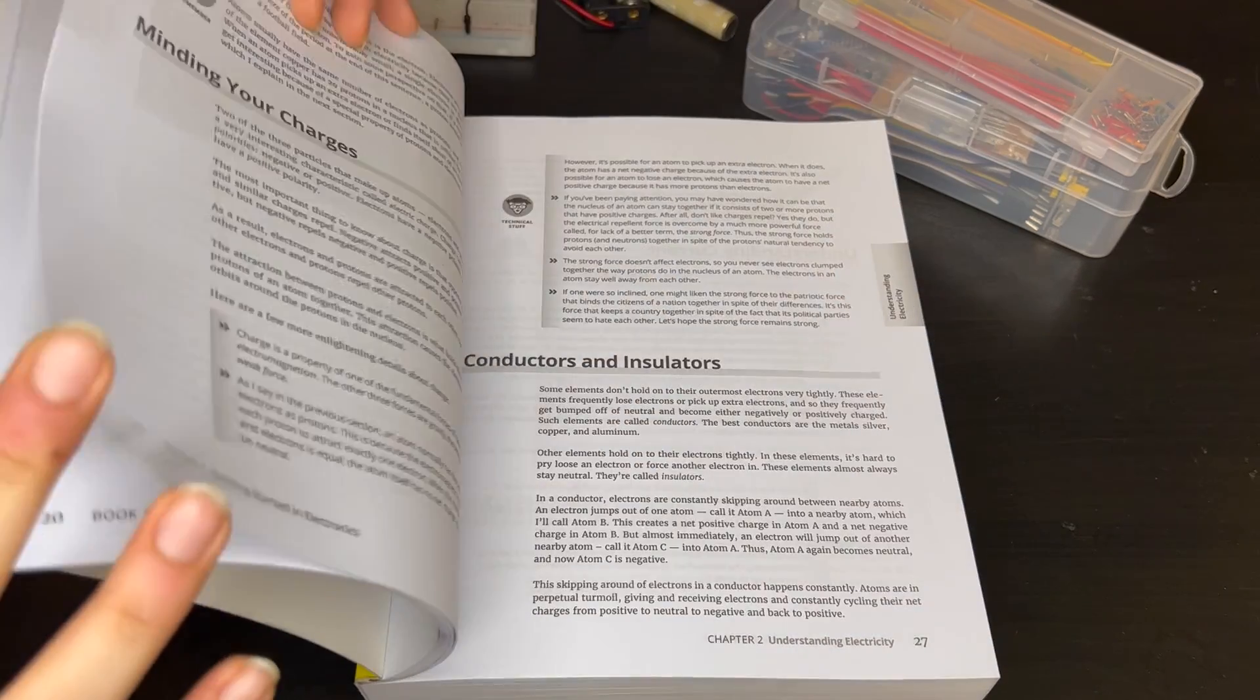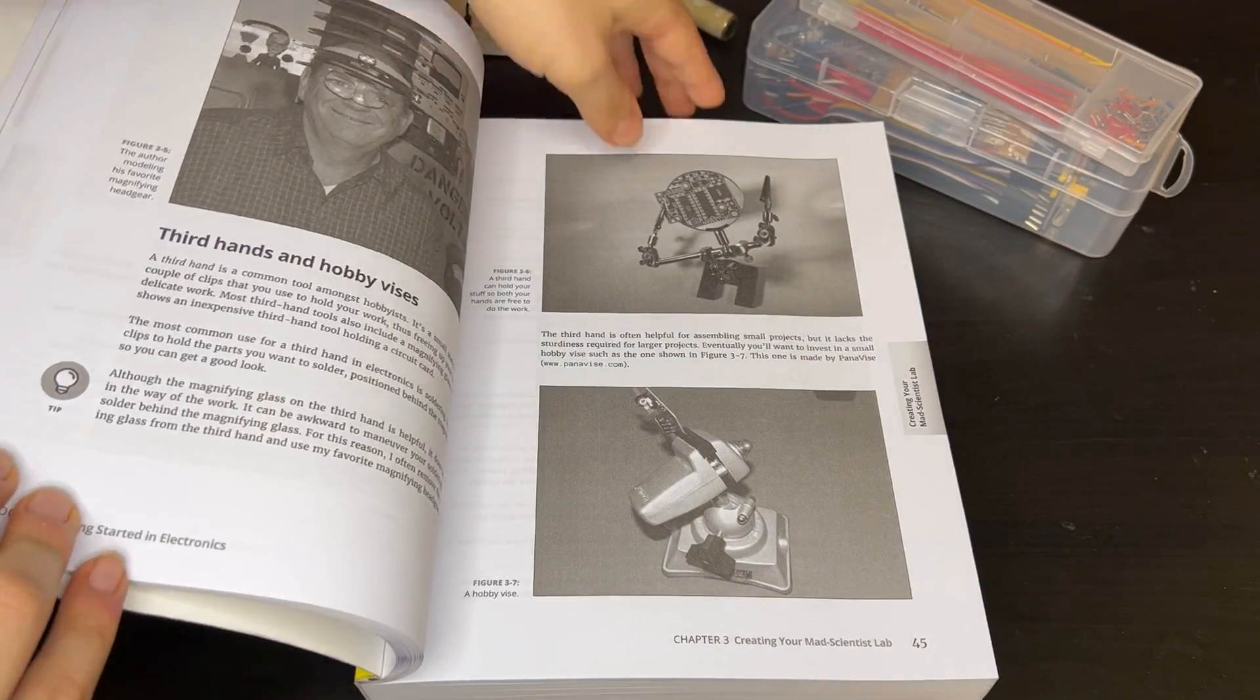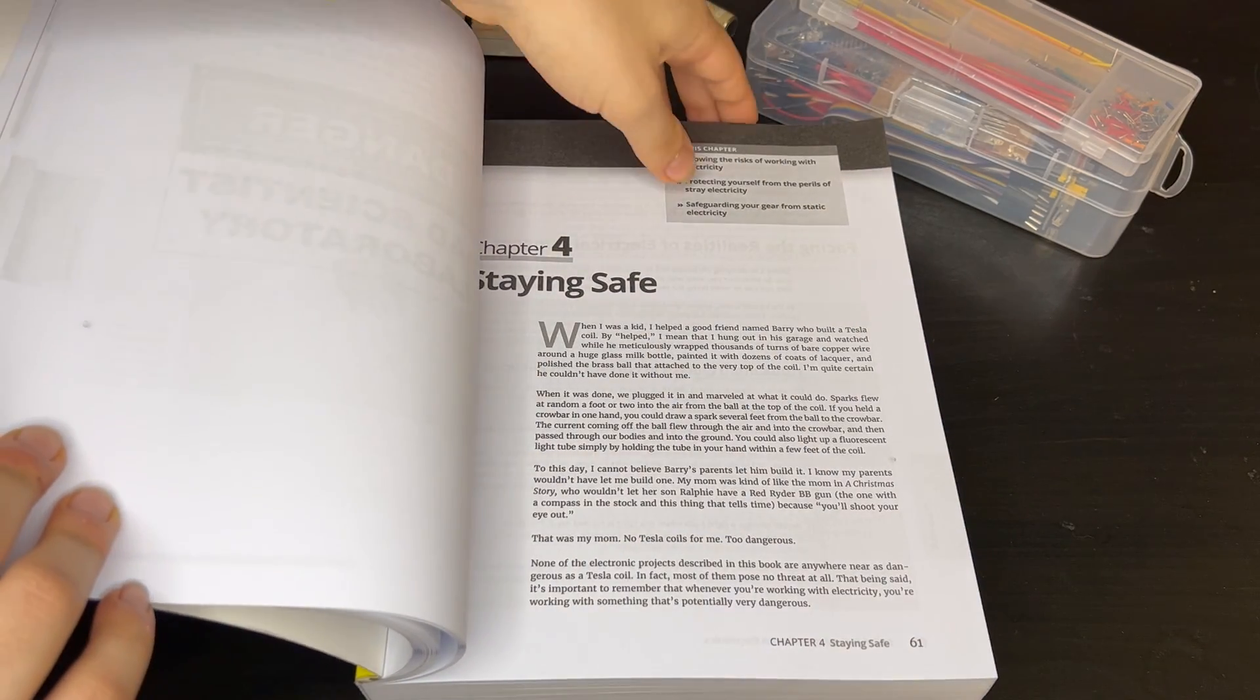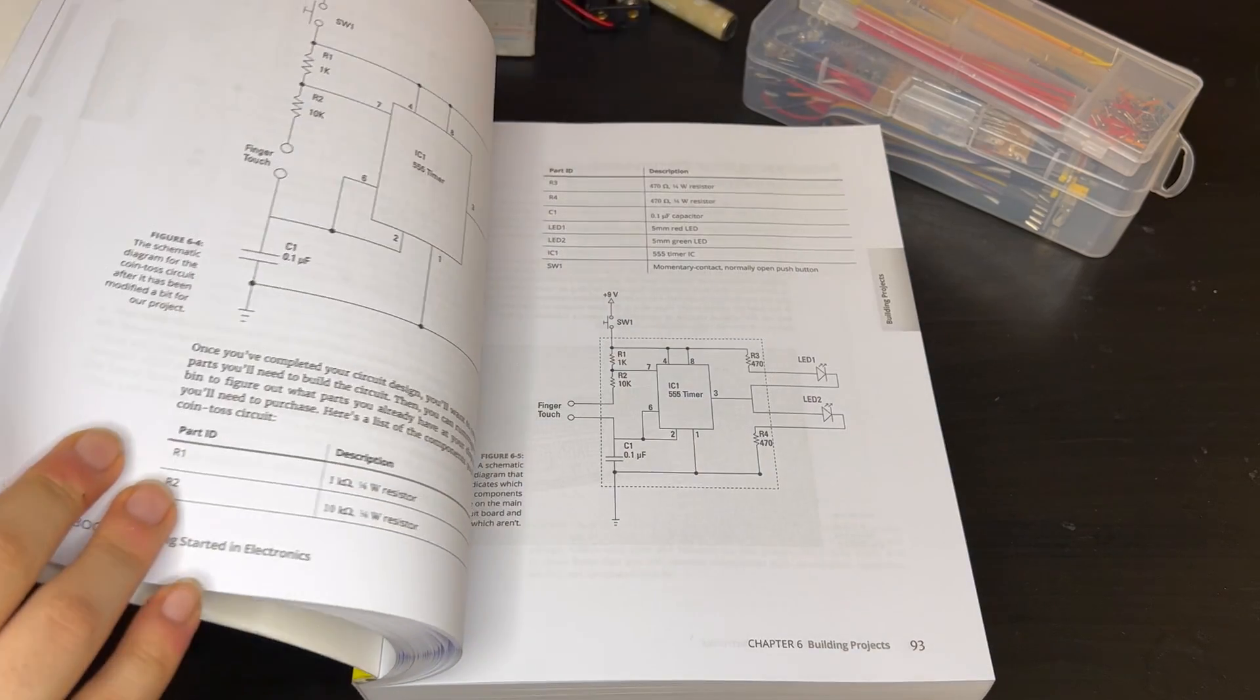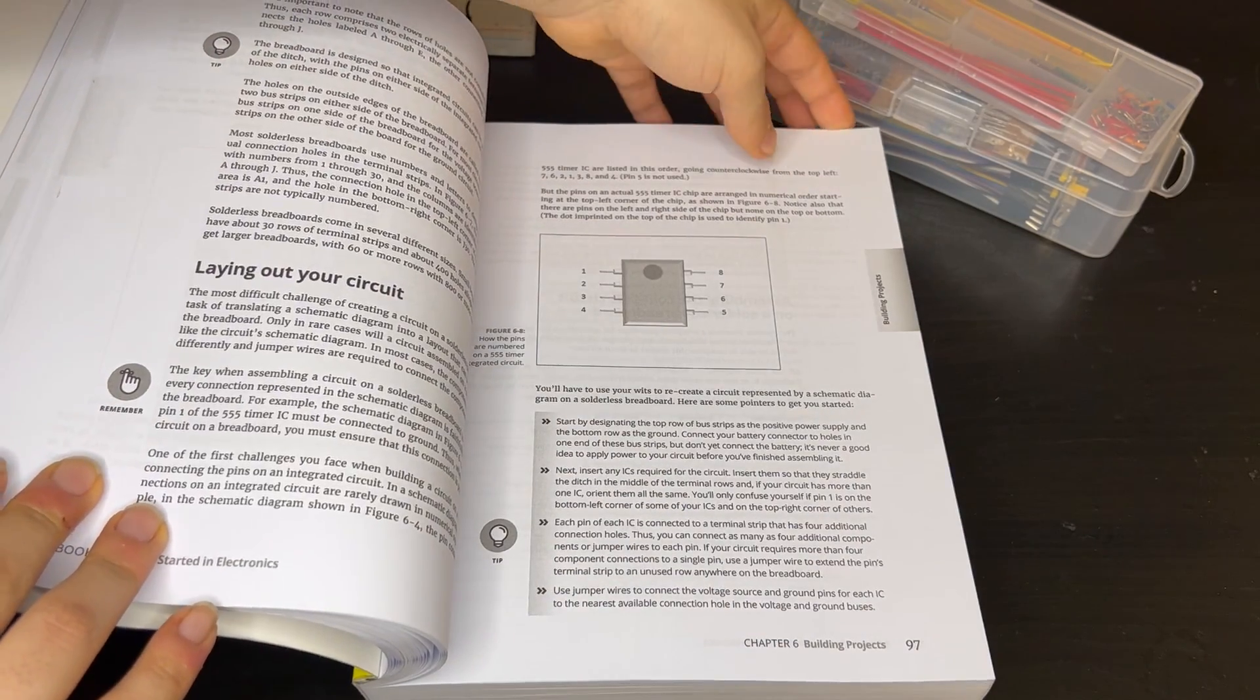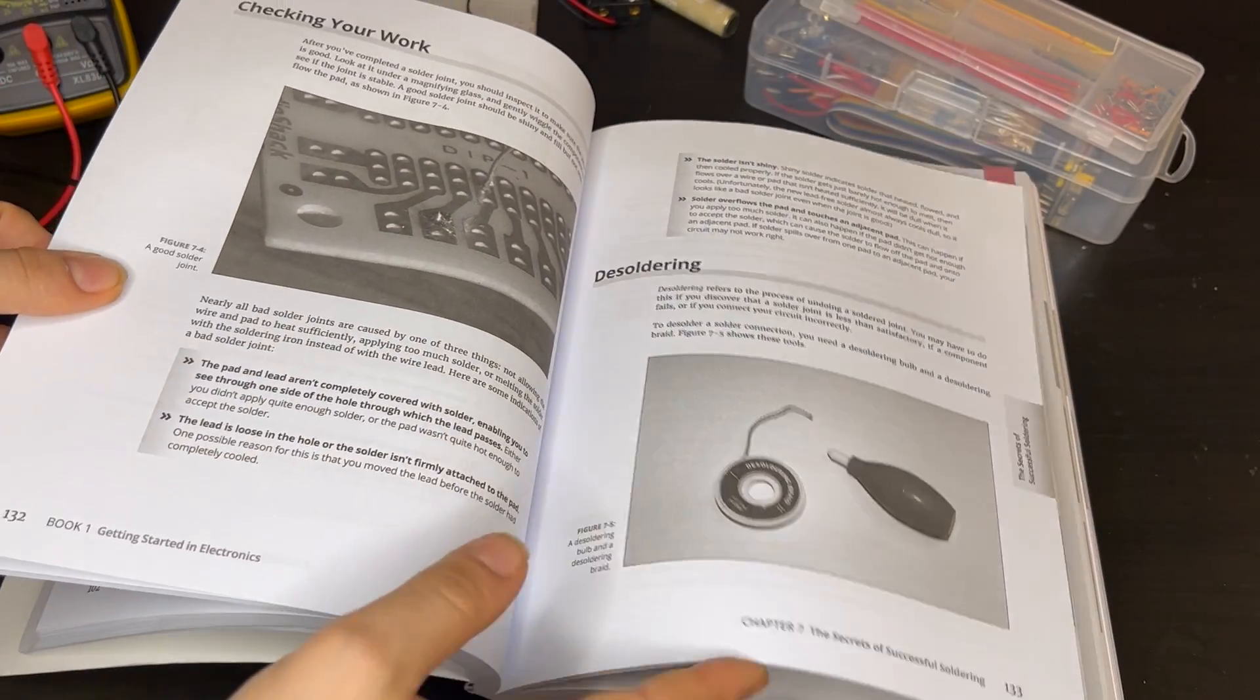It covers the basic components you'll need to build the projects in this book. It also talks about the multimeter, soldering, and how to use an oscilloscope. It introduces the components you'll need to start doing electronics as a hobby.